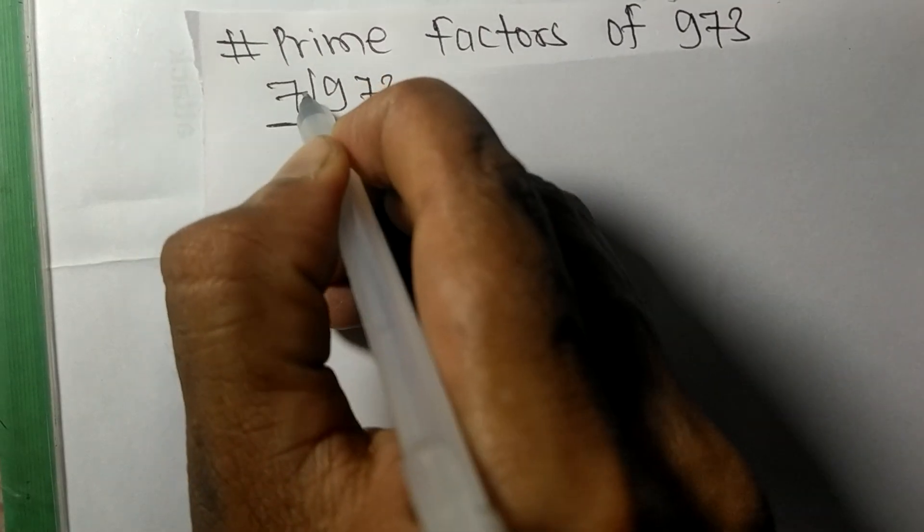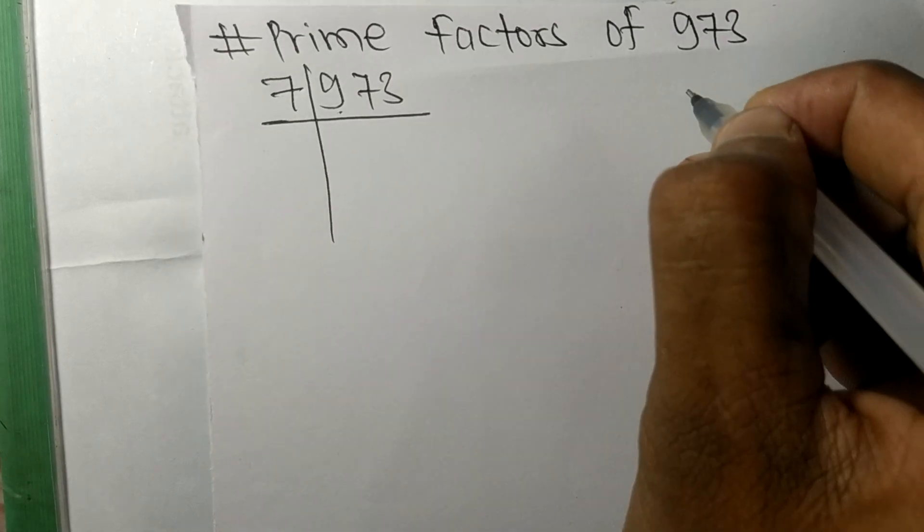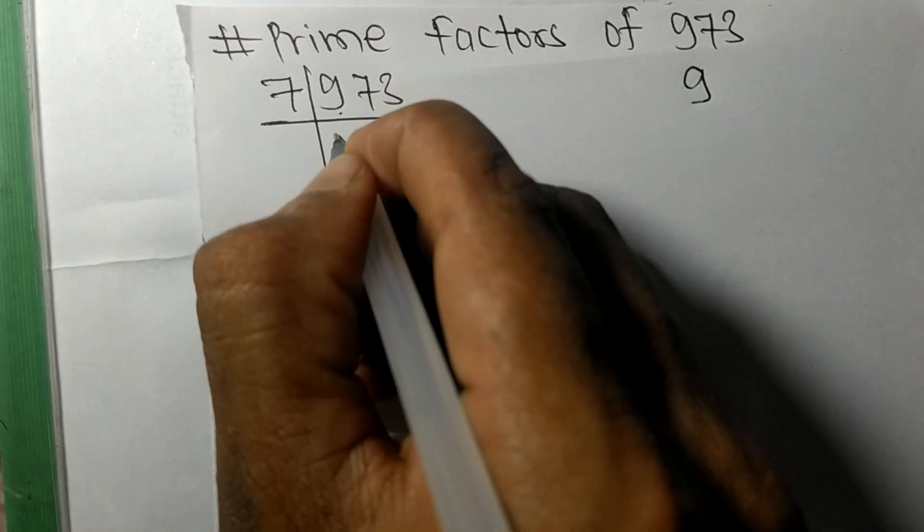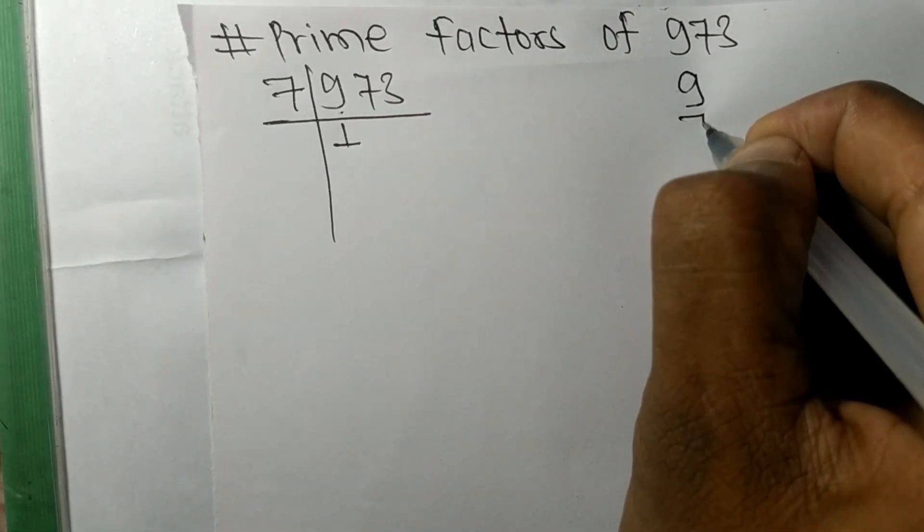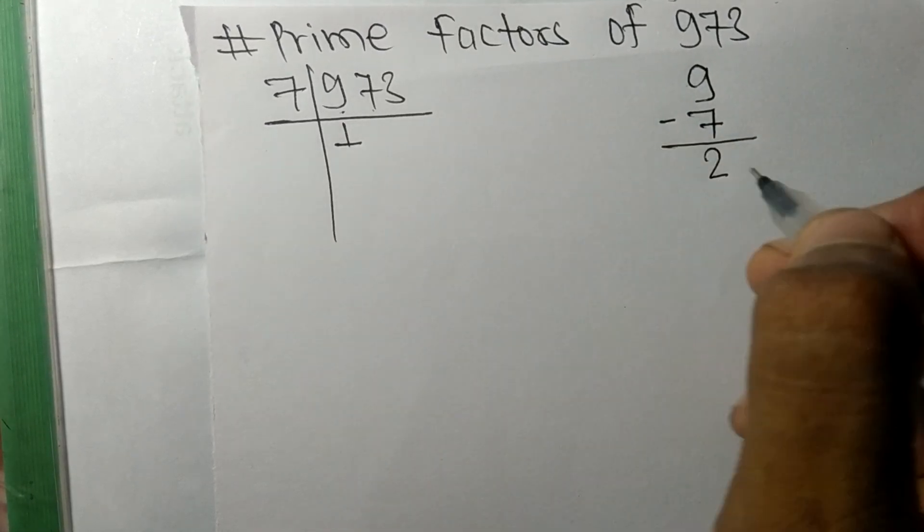So first we have 9. 7 times 1 means 7. On subtracting we get 2 and this brings down to 27.